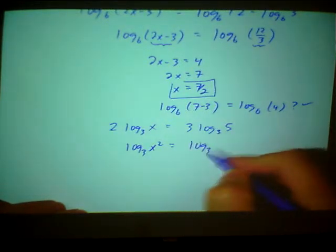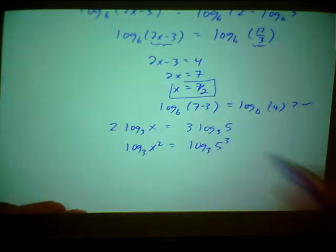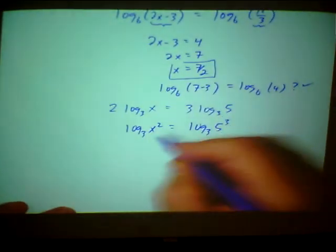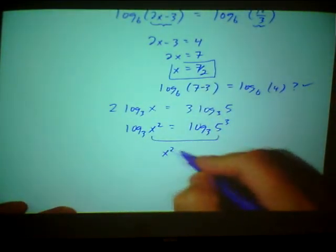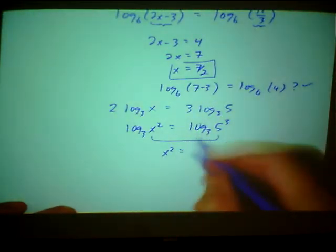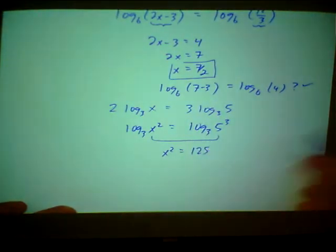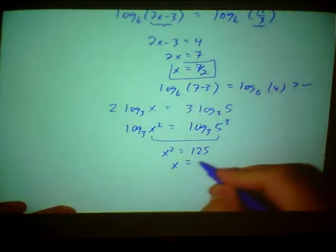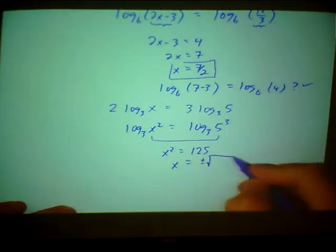They become exponents. So now, now I have two logs on each side with no coefficients, and now I can set the arguments equal to each other. In this case, the x squared is going to equal 5 cubed, which I believe is 125, and therefore x would be plus or minus square root of 125.